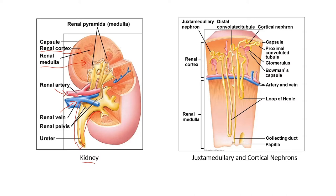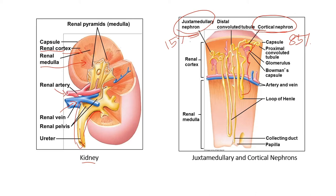The nephron is the functional unit of the vertebrate kidney. Of the roughly one million nephrons in each kidney, about 85% are cortical nephrons. The difference between cortical nephrons and juxtamedullary nephrons is that cortical nephrons extend only a short distance into the medulla, whereas juxtamedullary nephrons extend deep into the medulla. This is essential for production of urine that is hyperosmotic to body fluids and is a key adaptation for water conservation in terrestrial animals.